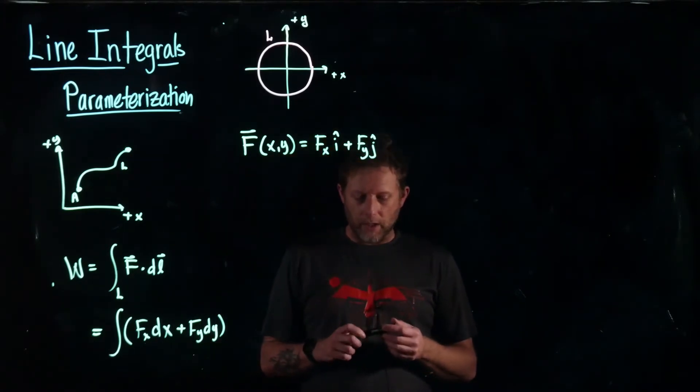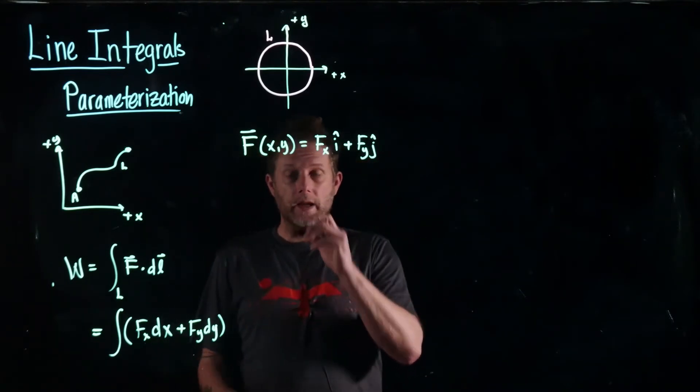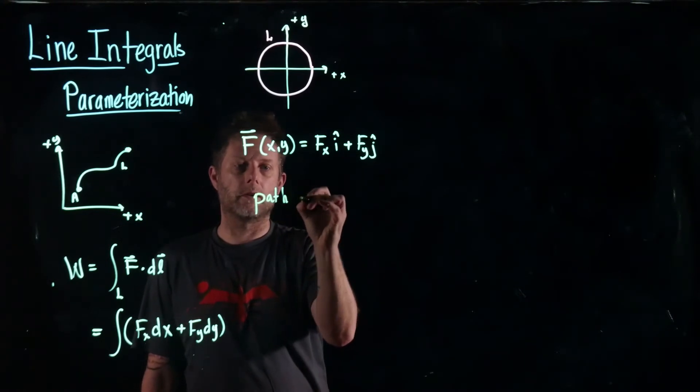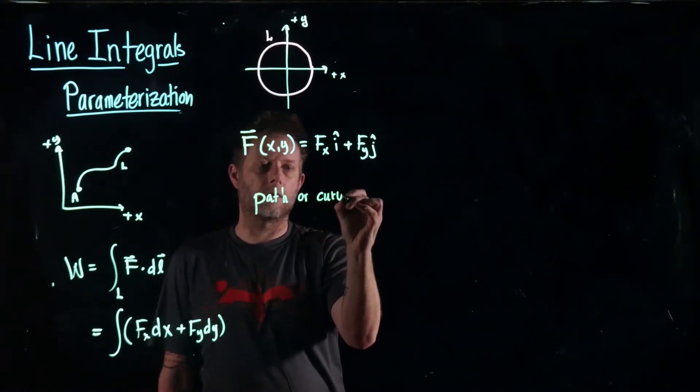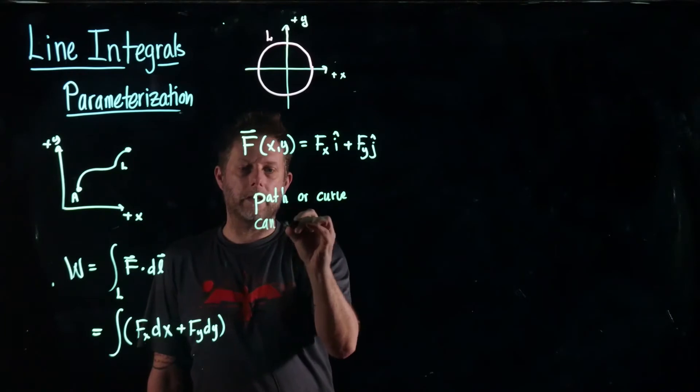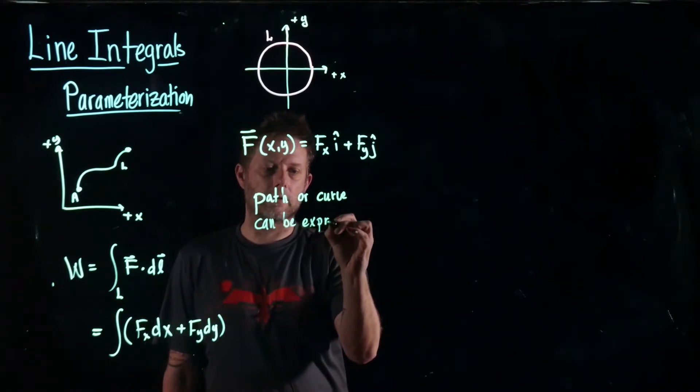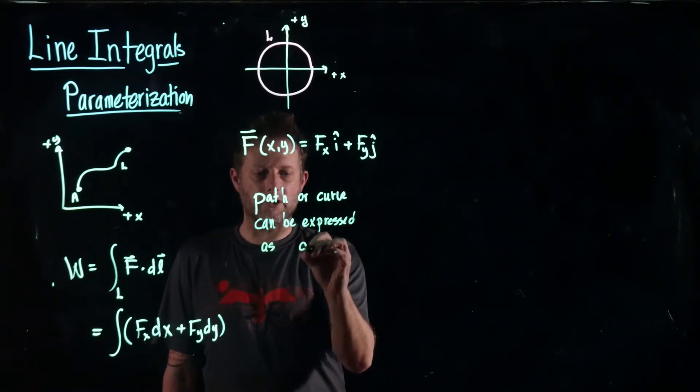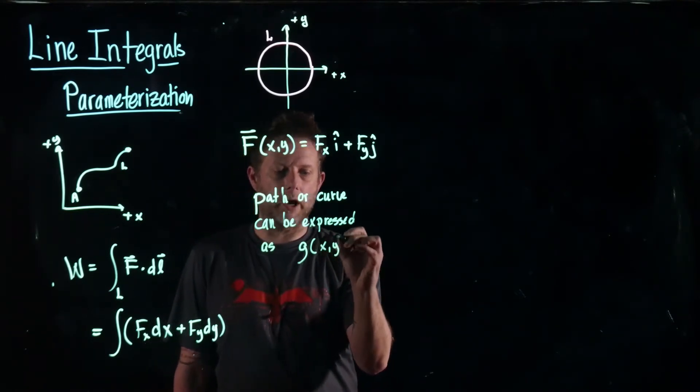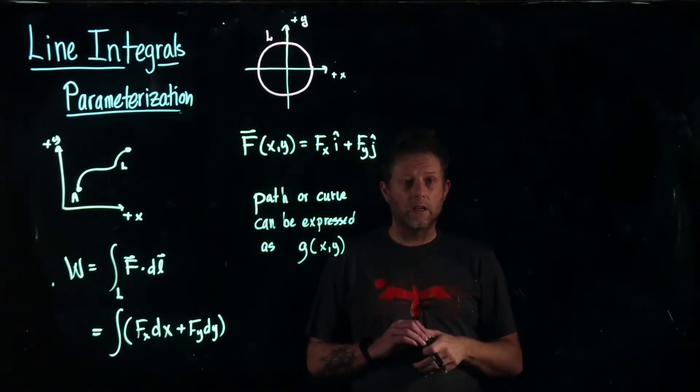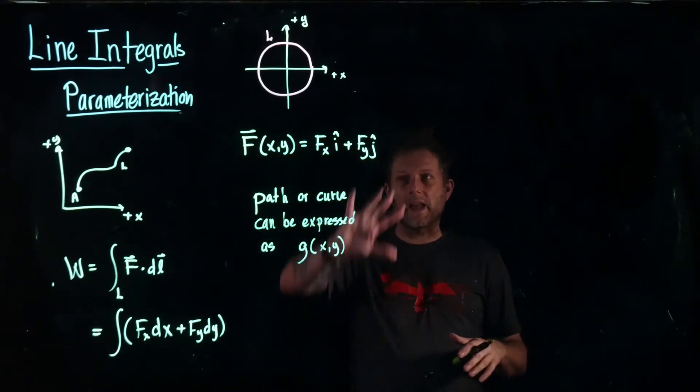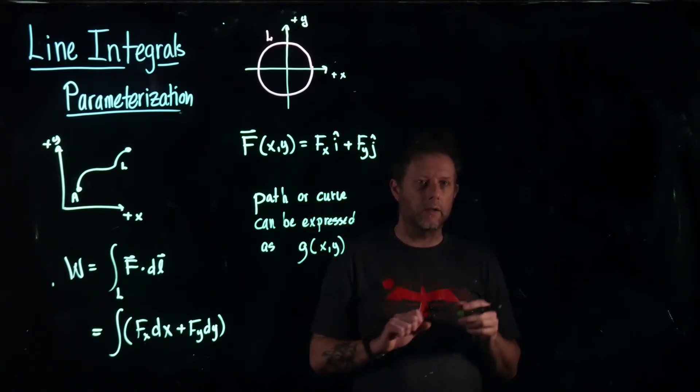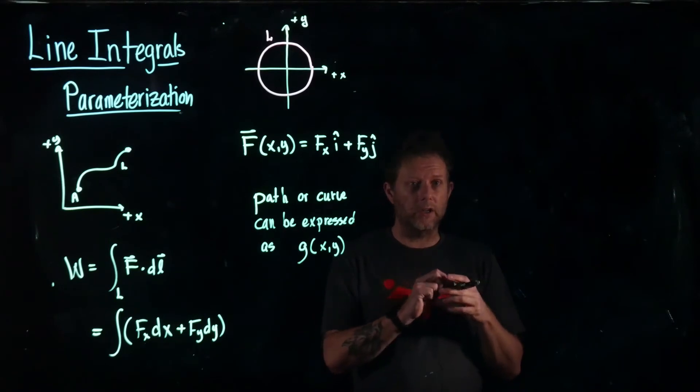But what we're going to assume is that we're going to take and say that this curve or path can be expressed as some function of x and y. So that's the assumption. We can take any curve and we can describe it as a function of the coordinates x and y. And the coordinates x and y are our Cartesian coordinates.